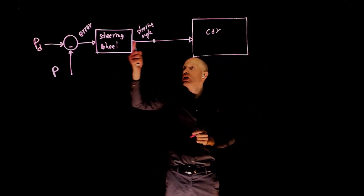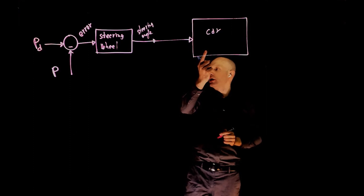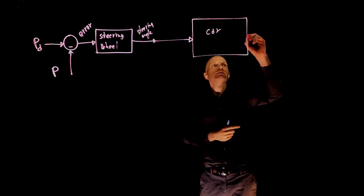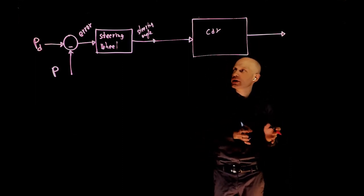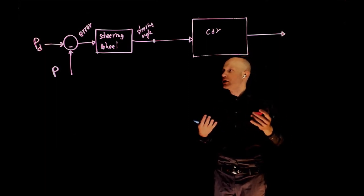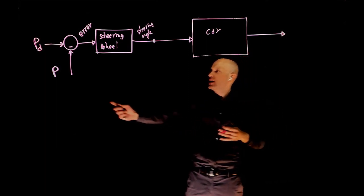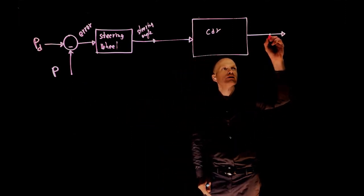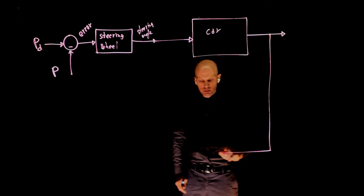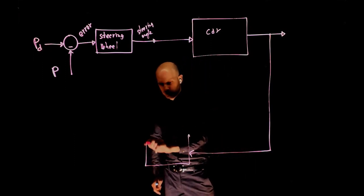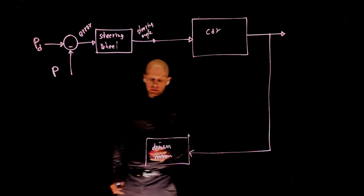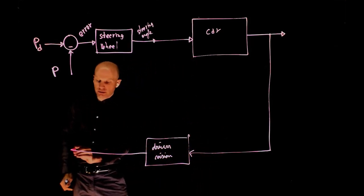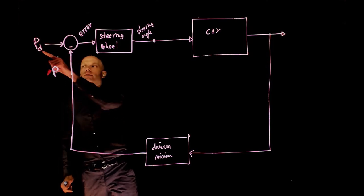Based on the error, we change the steering angle more or less and give that to the car. The car now responds to that command — that's the output of the car. And we measure now where we are relative to our desired path. In this case, the sensor that we use to assess where we are is simply the driver's vision. So we can create another block here: the driver's vision gives now the current path that we needed in the beginning to compare with the desired path.